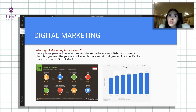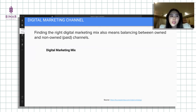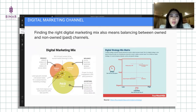Lanjut ke digital marketing channel. Basically, pasti pada pengen tahu channel-channel apa yang digunakan untuk digital marketing ini. Kita mengacu kepada digital marketing mix. Gampangnya ada tiga pilar dalam digital marketing: ada media yang berbayar, ada media yang own yang dimiliki dari media tersebut, sama paid media.